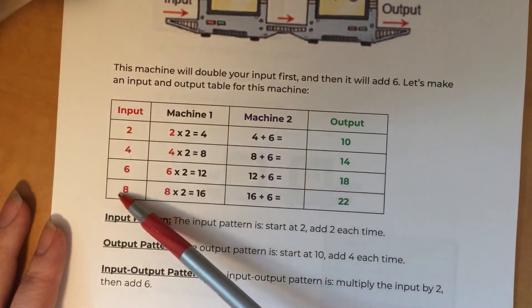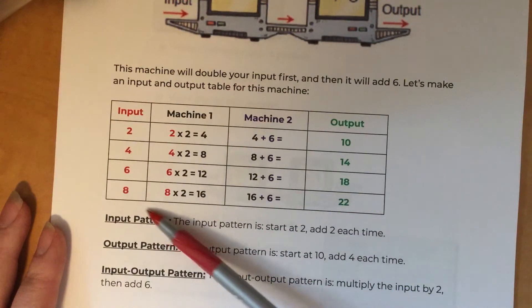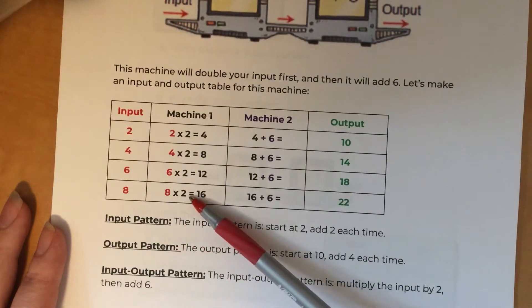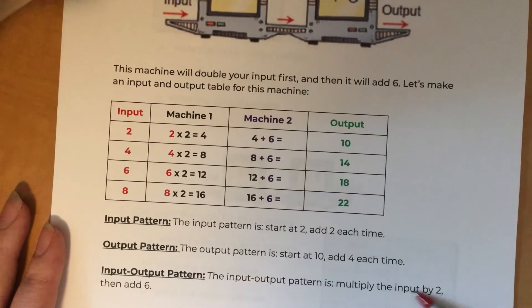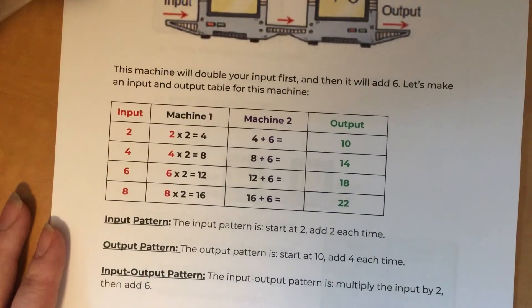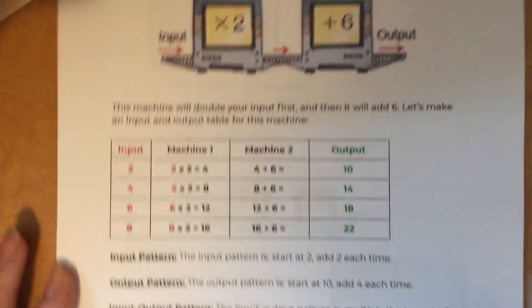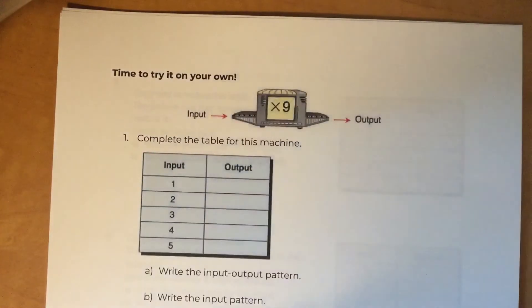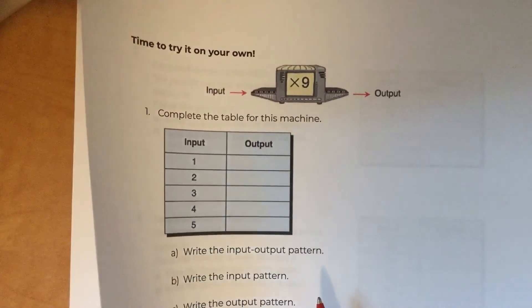The input-output pattern from input all the way to output is: multiply by two, then add six. It's a two-step process — you're not doing both operations at the same time. There are some problems for you to try on your own — check the answer booklet to make sure you're doing it correctly.